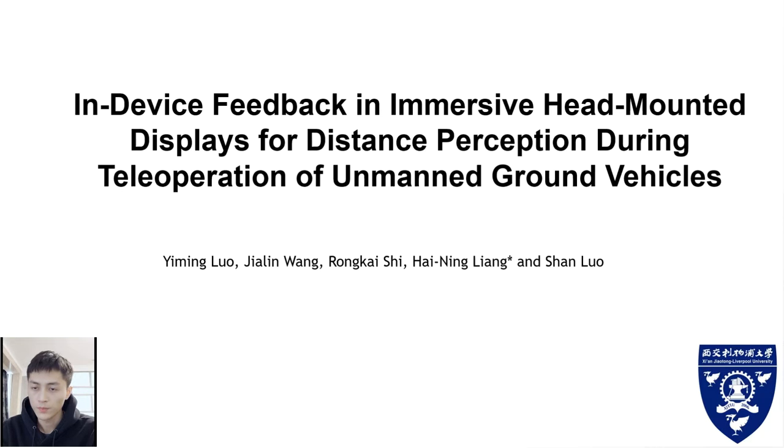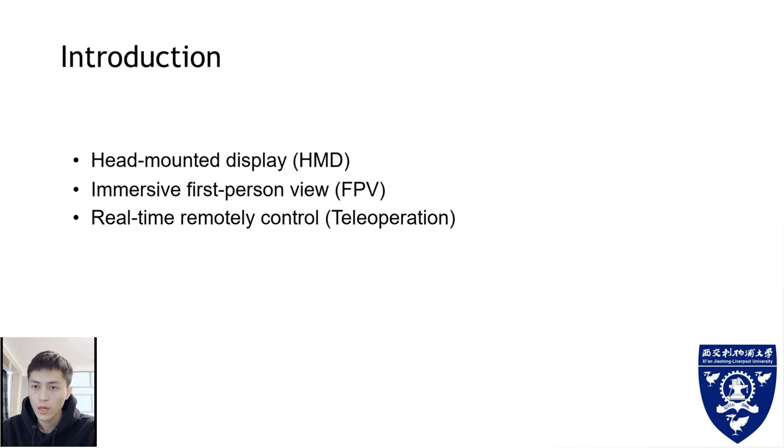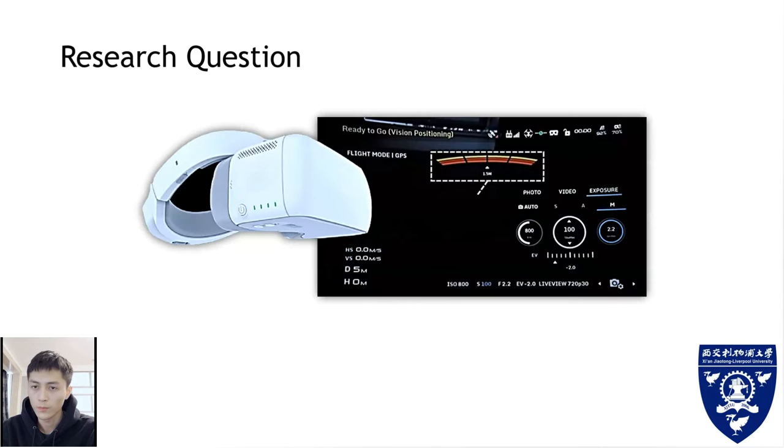Let's have a brief introduction. Head-mounted displays have been used to provide an immersive first-person view in real-time for manipulating remotely controlled unmanned ground vehicles. Distance perception for real-time teleoperation has been studied to improve user experience and task efficiency. One common way for preserving distance information is to provide visual distance indicators on screen.